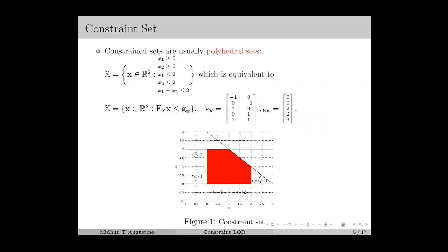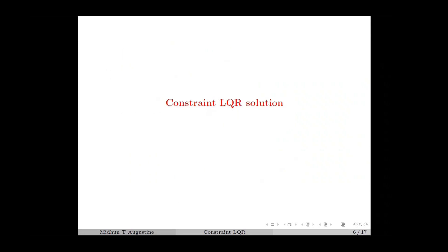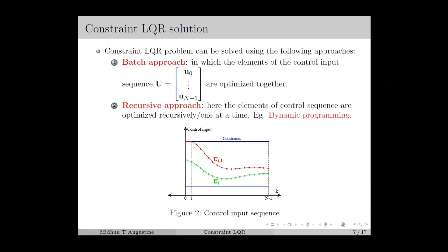In this lecture, we consider linear inequality constraints, which restricts the states and control inputs to polyhedral sets in R^n and R^m. From figure 1, we can observe that the polyhedral sets are convex sets, since the line segment connecting any two points in this set is also contained in the set. Similar to the continuous and discrete LQR case, the constrained LQR problem can be solved using the batch approach, in which elements of the controlled input sequence are optimized together, and the recursive approach, in which elements are optimized one at a time. In the unconstrained case, the recursive approach is preferred because the optimal cost-to-go can be represented as a quadratic function using a Riccati matrix.